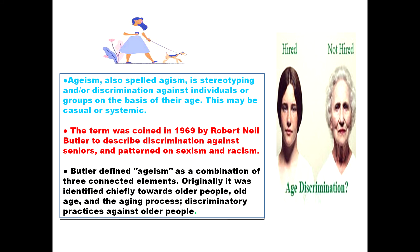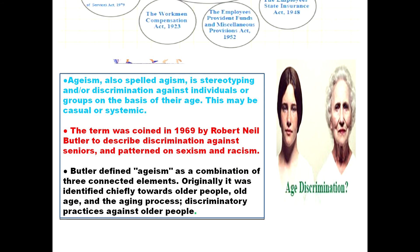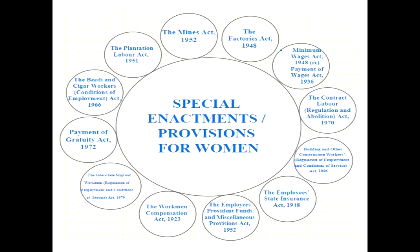There are special enactments and provisions for women, including the Plantation Act (1951), the Mines Act (1952), the Factories Act (1948), the Payment of Gratuity Act (1970), the Employees State Insurance Act (1948), and the Workmen's Compensation Act (1923). These are some specialized protections for women.